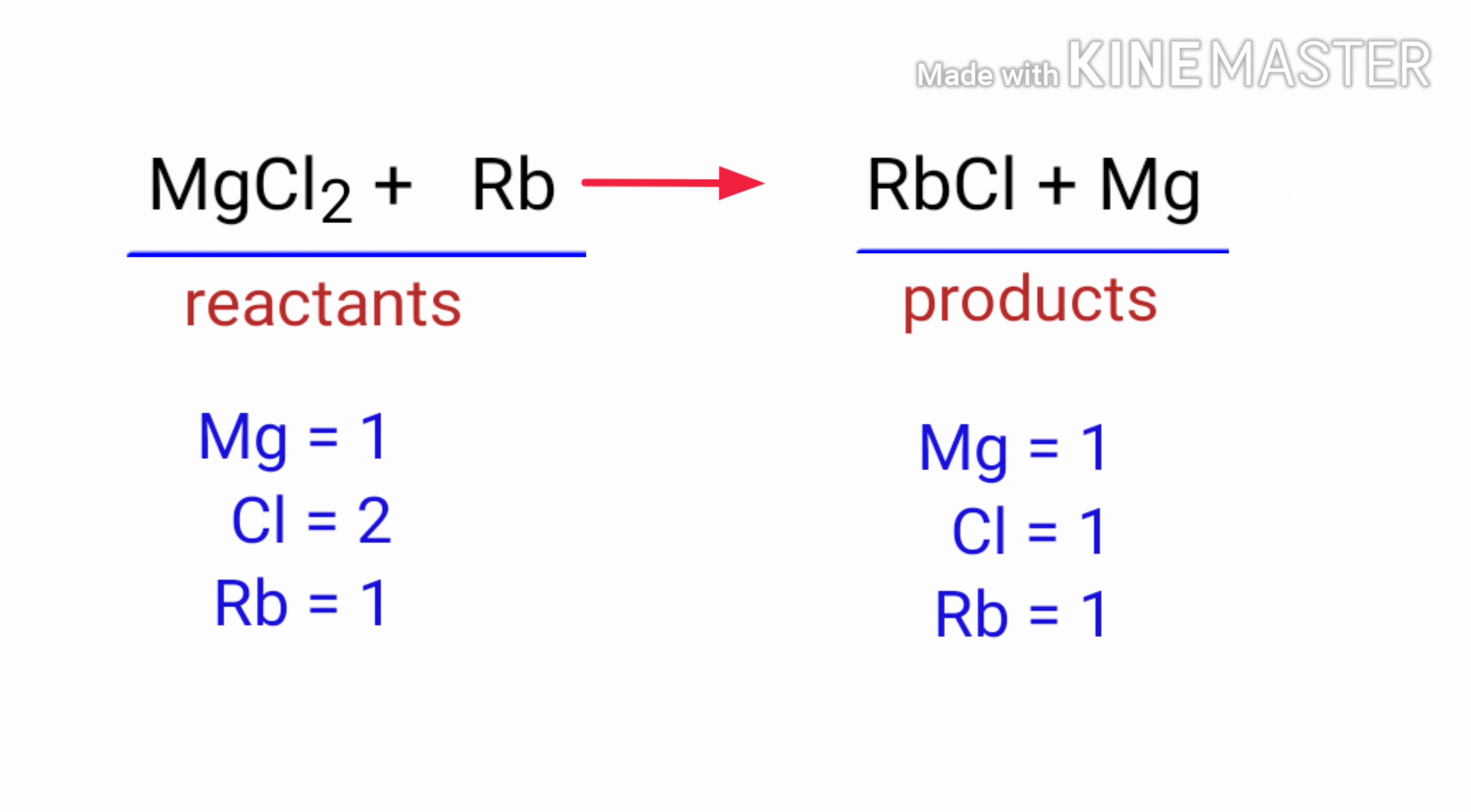If you look at this equation, the equation is not balanced. In the reactants side, there are one Magnesium atom, two Chlorine atoms and one Rubidium atom present.